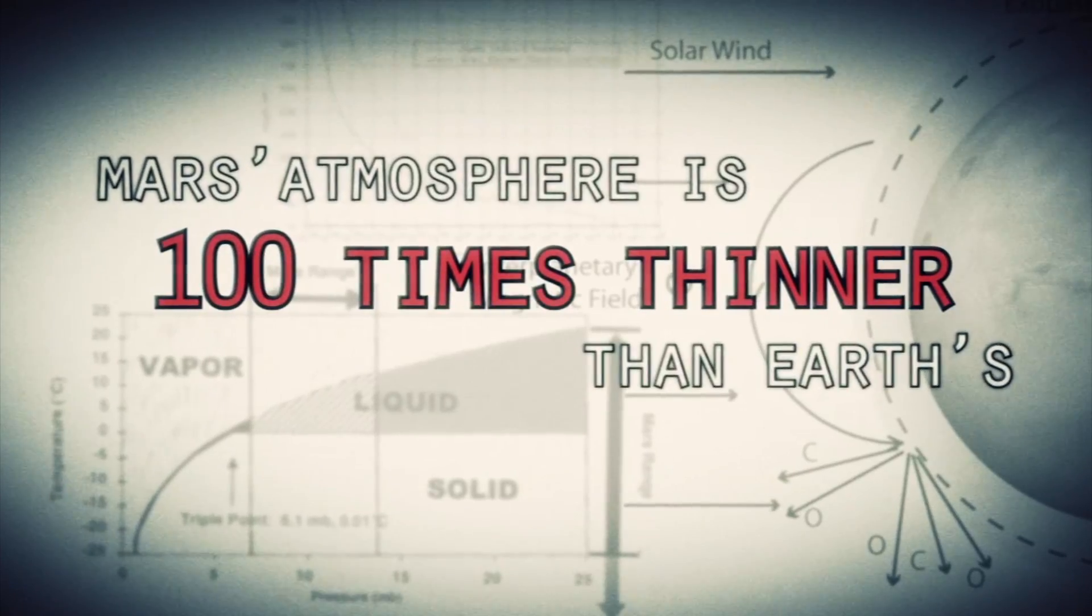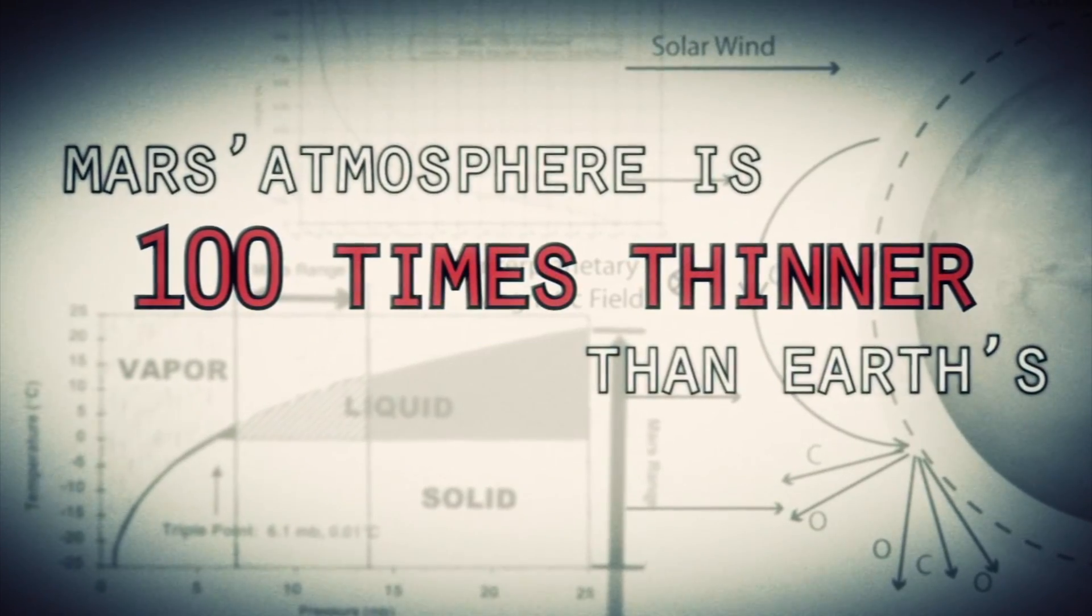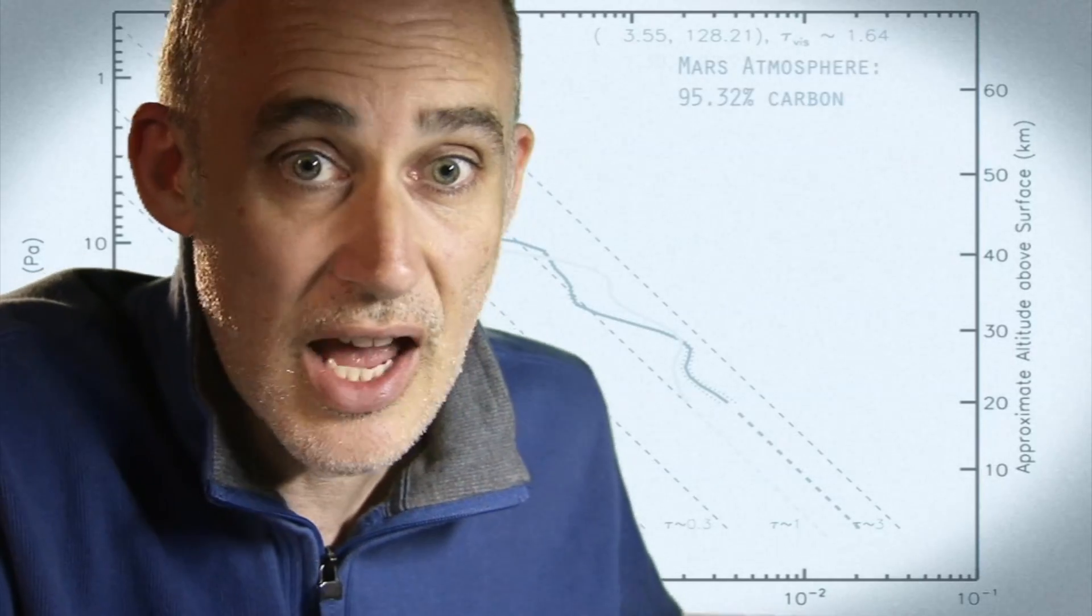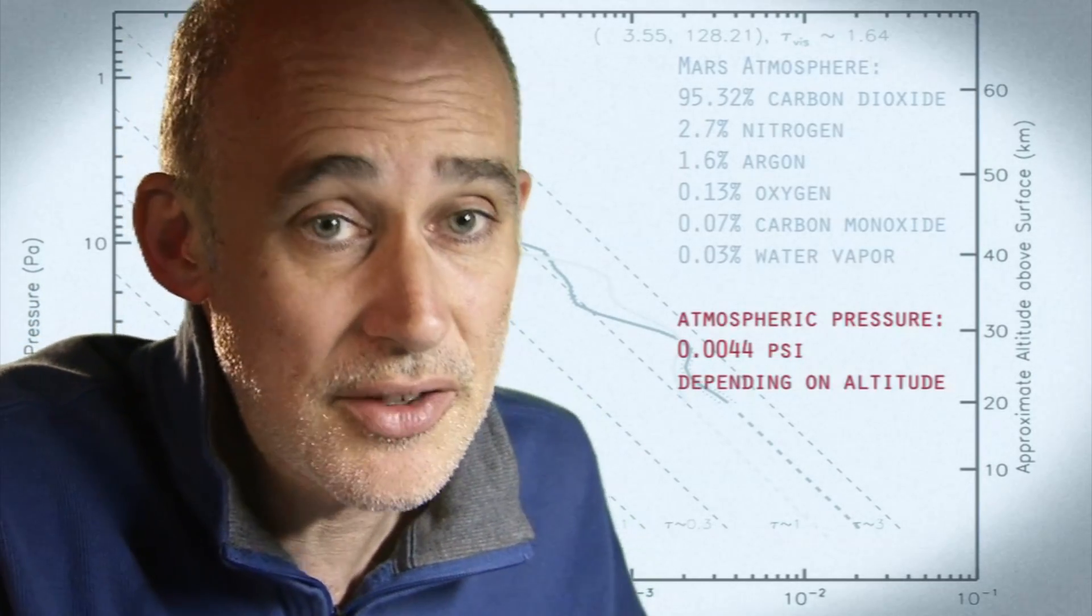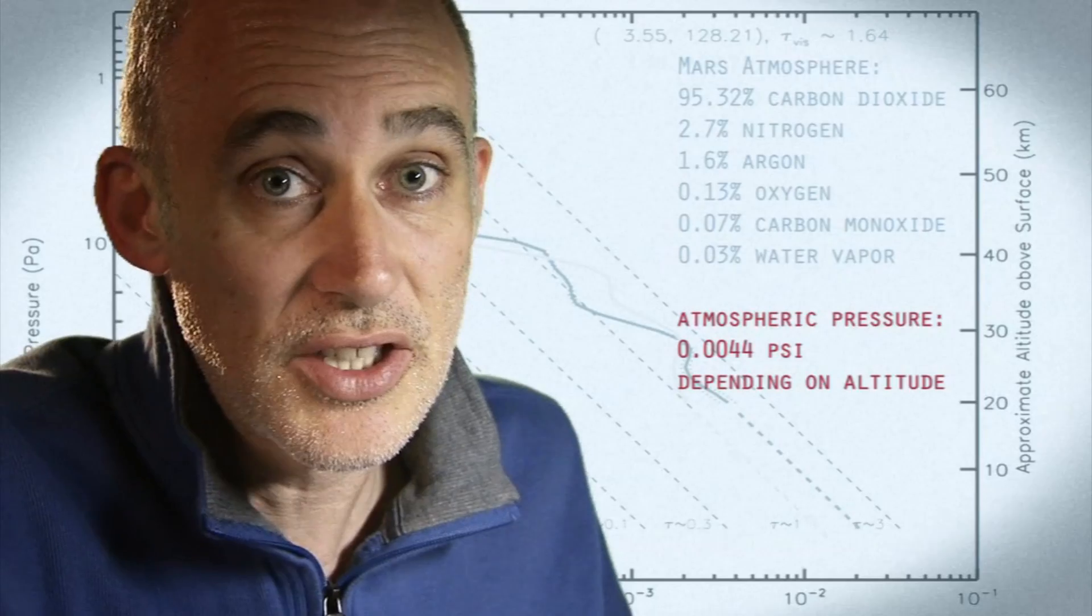Mars is actually really hard to slow down, because it has just enough atmosphere that you have to deal with it, otherwise it will destroy your spacecraft. On the other hand, it doesn't have enough atmosphere to finish the job.